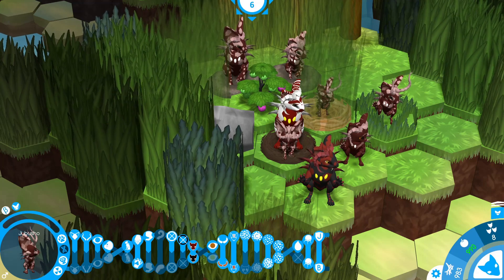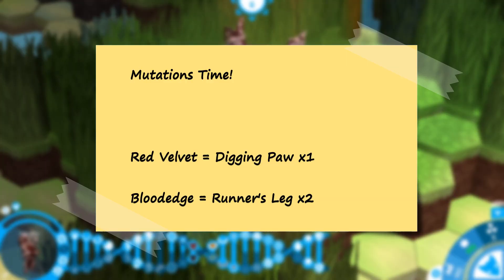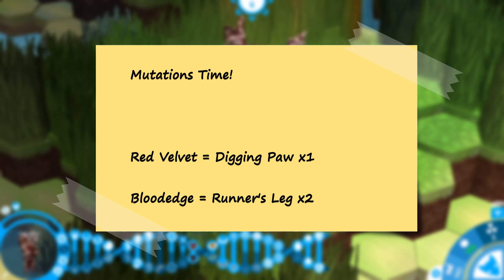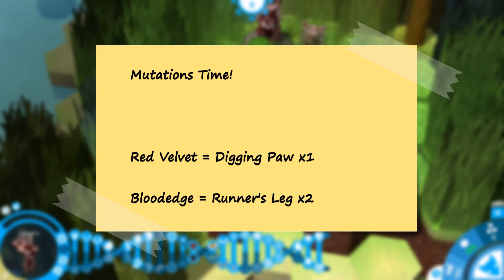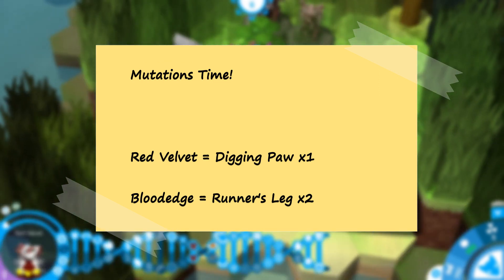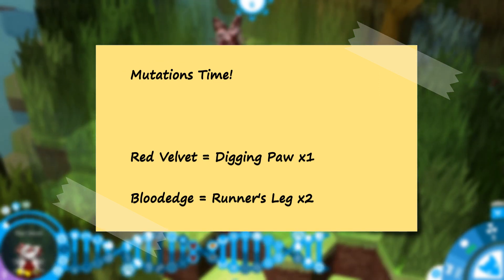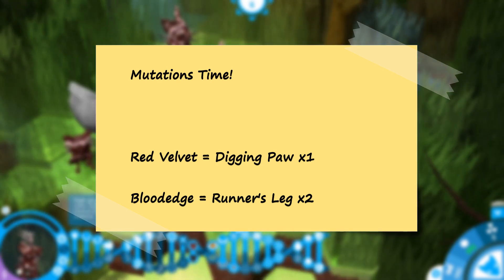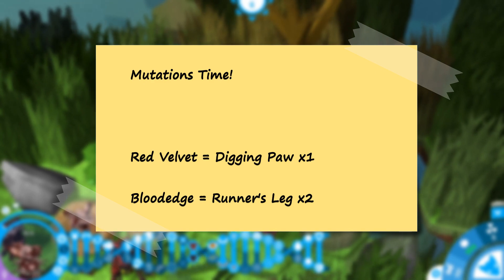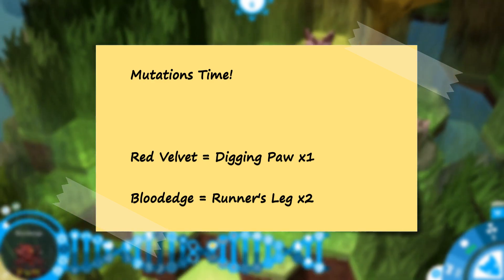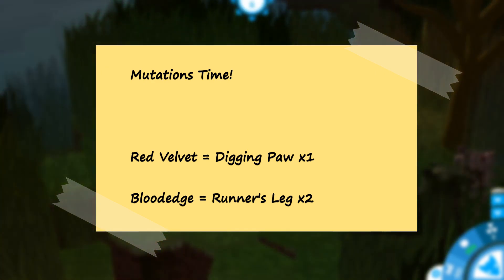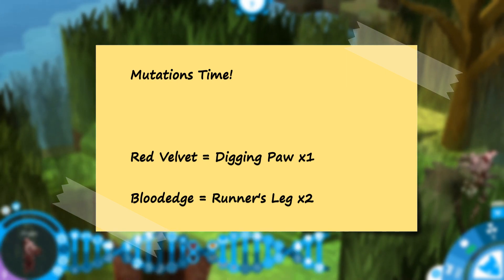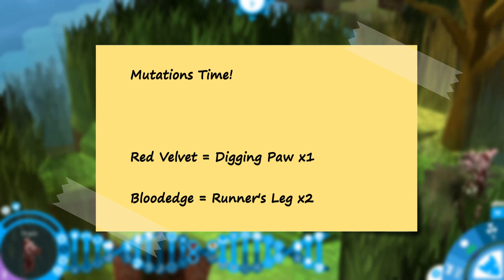Starting a new save file, Test B is now also Timeline B—a universe where Red Velvet sent a prayer that her cubs may have digging paw, while Blood Edge sent a prayer that his cubs may have runner's leg. I'm filling Blood Edge's mutation menu with his choice, while only putting one copy in Red Velvet's, because I really want to see if I can get any nicheling cubs with runner's leg at the top of the DNA strand. This minimizes the odds of RNG ruining my life, but that's admittedly up to the hands of the nicheling gods.